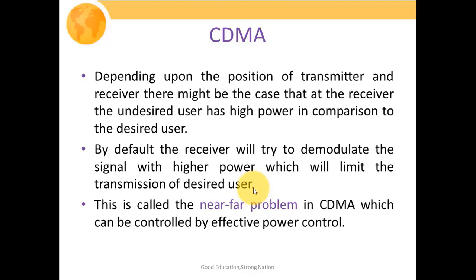The near-far problem means users lying near the base station receive high signal power compared to users at the edge or far from the base station. Proper signal reception becomes a bigger problem for mobile users far from the base station. This problem can be controlled with effective power control — we restrict the transmission power of individual users depending on their distances. The base station instructs nearby mobile users to transmit at lower power so they do not increase the noise floor for users far from the base station.